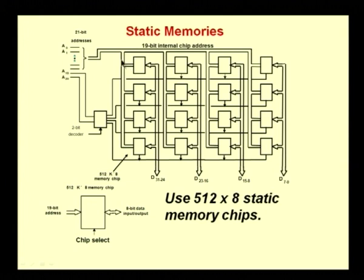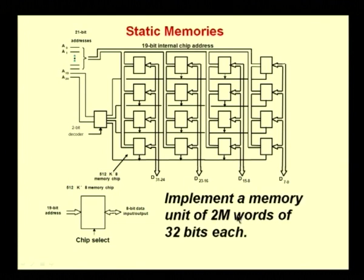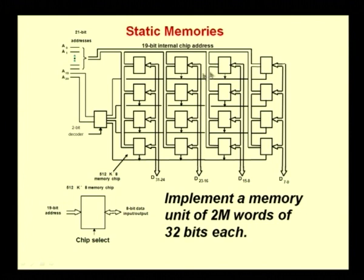Now that we have all these devices, how do we interconnect them? For 2 mega words we have 21 address lines, A0 to A20. These 512-capacity devices only require 19 address lines, so A0 to A18 connect to each device. The most significant 2 bits — A19 and A20 — go through a 2-bit decoder to select one of the 4 rows. Once a row is selected, a particular byte within the 4 bytes in that row can be accessed.